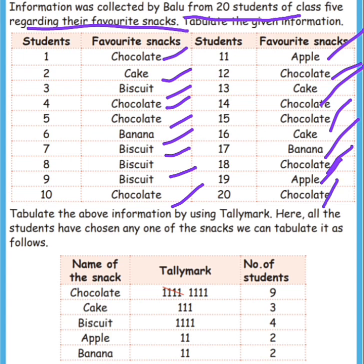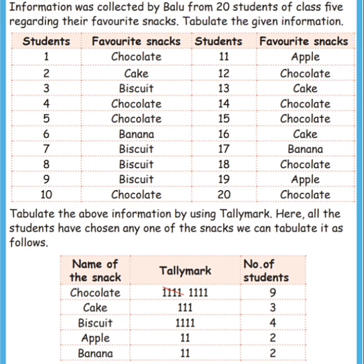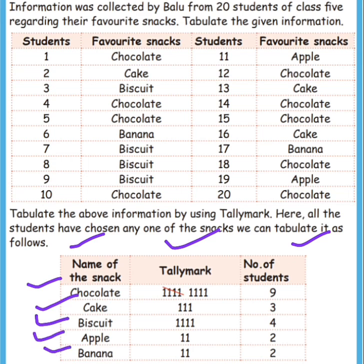Now how to find the answer. First we put the name of the snacks column, next the tally marks column, next number of students. Now first we write the names of the snacks: chocolate, cake, biscuit, apple, banana. Now if you like chocolate, how many students? We have to count and write the number.